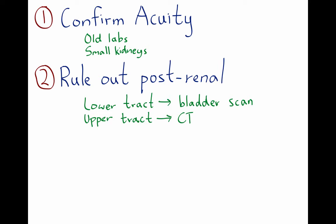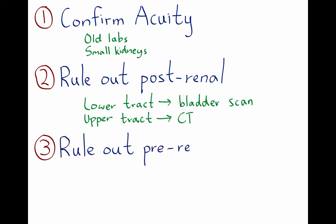Concomitantly, we look for clues of pre-renal azotemia. Classically, you'll see a change in blood pressure from baseline or orthostasis. The urine fractional excretion of sodium might help, but in my experience it's not very helpful.